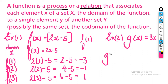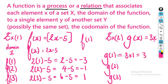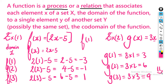Now let's find g(1), g(2), and g(3). Putting 1 where x is gives 3 times 1, which is 3. For g(2): 3 times 2 equals 6. And g(3): 3 times 3 equals 9. In an exam they'll give you f(x) or g(x) and ask you to evaluate — don't overthink it.